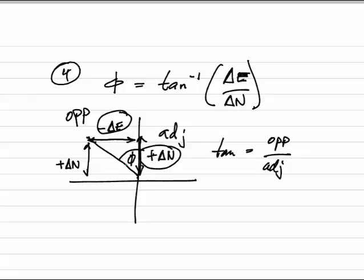If I do this consistently, change in easting over change in northing regardless of which quadrant I'm in, then that angle will be relative to north in the northern quadrants and south in the southern quadrants.